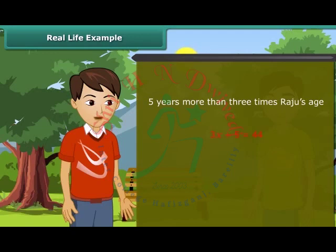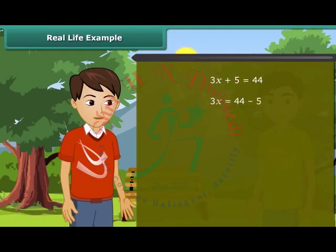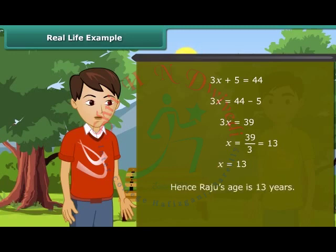Now we will solve this equation. Transposing 5 to right hand side, we get 3X which is equal to 39. Transposing 3 to right hand side, we get X as 13. Hence Raju's age is 13 years.